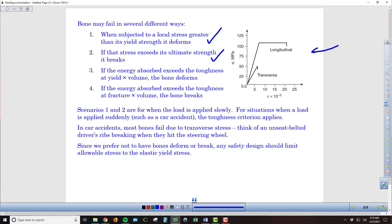And then of course there's the energy component. If the energy absorbed exceeds the toughness, then the bone is going to deform. If the energy absorbed exceeds the toughness at the fracture point, then the bone is going to break. Scenarios one and two are for when the load is applied more slowly. For situations when the load is applied quickly, like in a car accident type situation, then it's the toughness criterion that's going to apply.